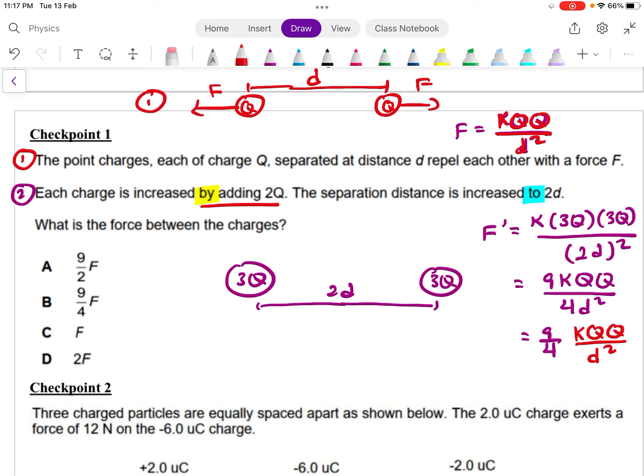Okay, then the second is that each charge is then increased by adding 2Q. Now it's not adding to become 2Q, it's adding by 2Q. So this one is a bit of English. So the separation distance is increased to 2D. So this is the force now between the charges.